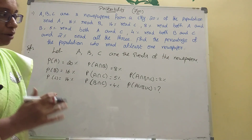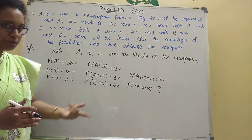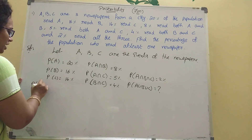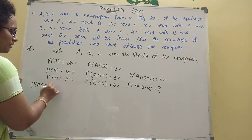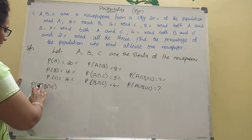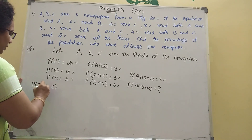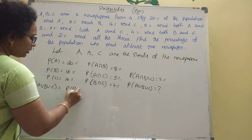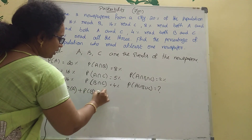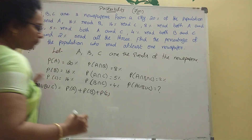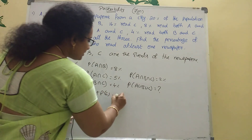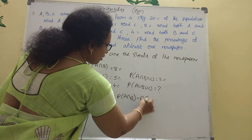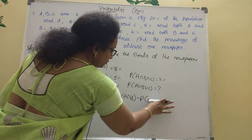P of A union B union C formula: P of A plus P of B minus P of A intersection B, minus P of B intersection C, minus P of A intersection C, plus P of A intersection B intersection C.